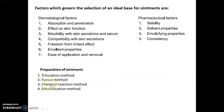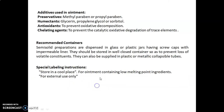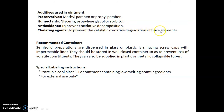Preparation of ointment involves four methods: trituration method, fusion method, chemical reaction method, and emulsification method. Additives used in ointments include preservatives such as methylparaben or propylparaben; humectants such as glycerine, propylene glycol, or sorbitol; and antioxidants, which are used to prevent oxidative decomposition. Chelating agents are used to prevent catalyzed oxidative degradation by trace elements.